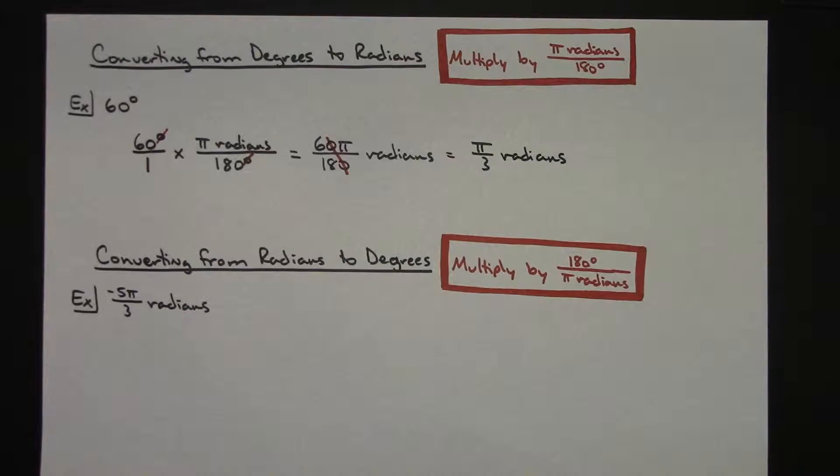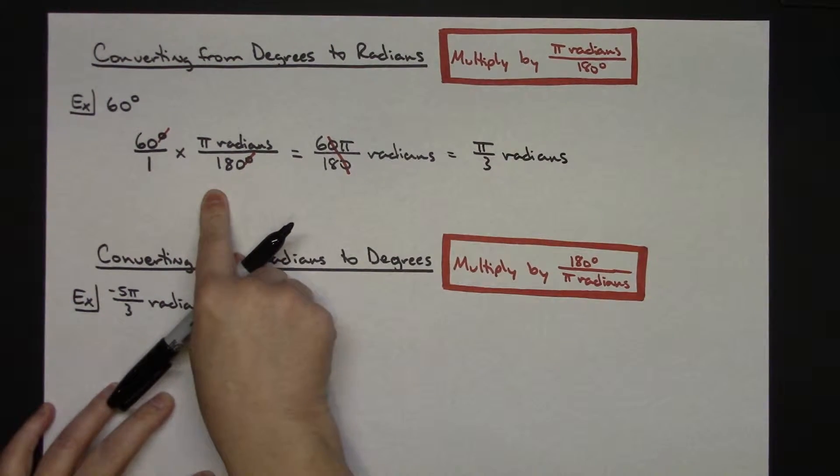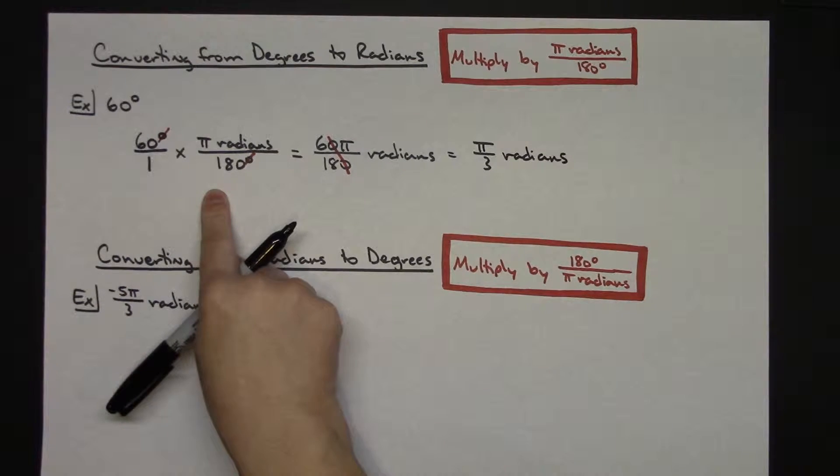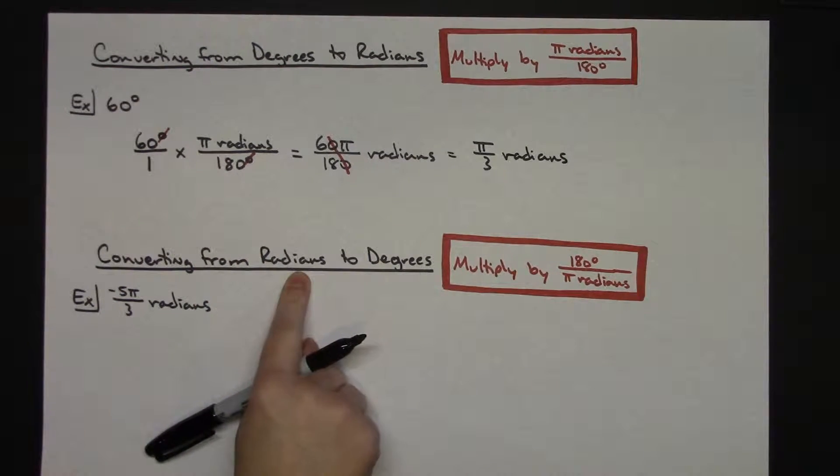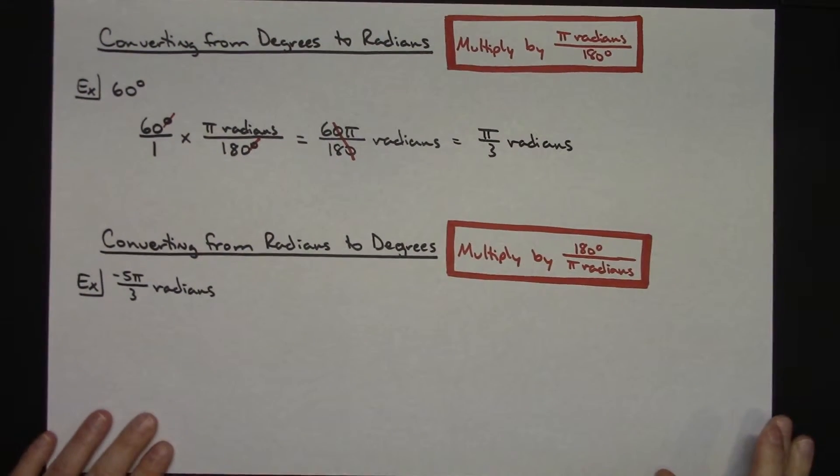And that one's on the unit circle. It's an easy one to convert, but I just wanted to show you the unit analysis with the conversion factor there. Now if I also wanted to go the other way around, if I had a radian measure and I wanted to convert it to degrees...